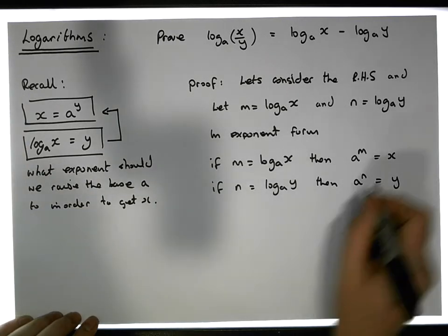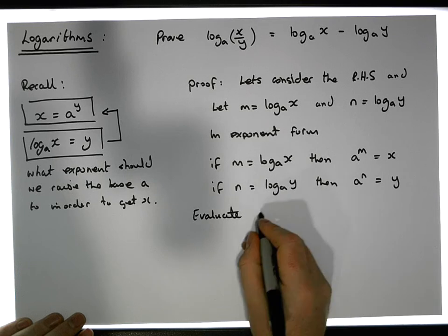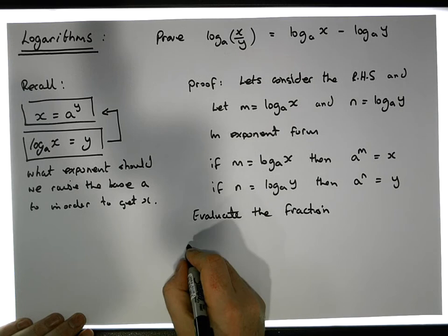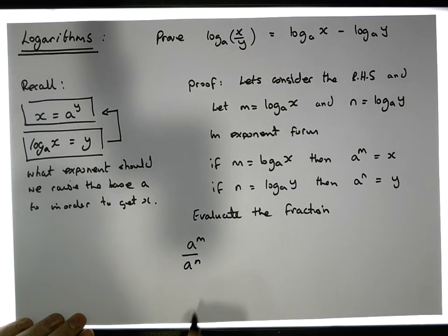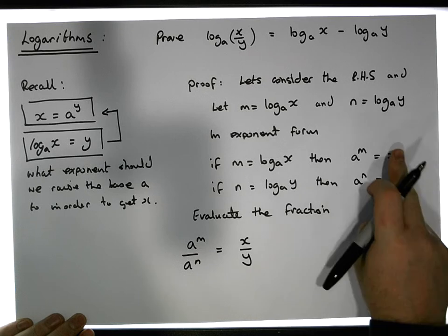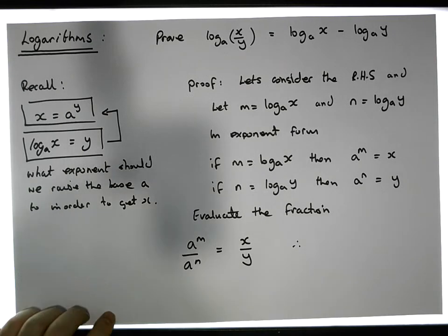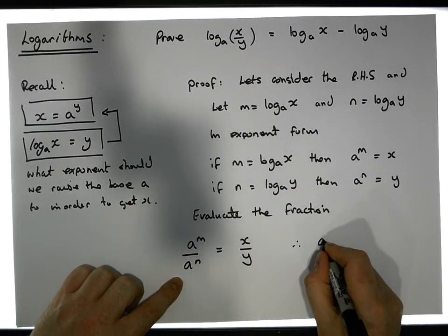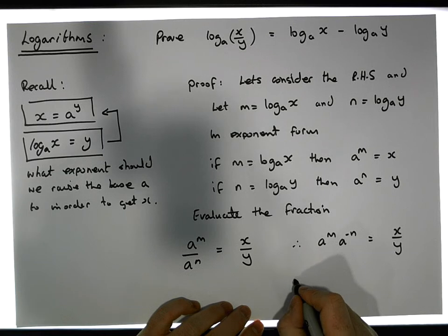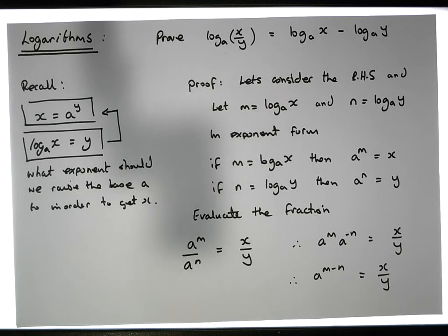Now let's evaluate the quotient. Let's evaluate a to the m over a to the n. Well, a to the m over a to the n is equal to x over y, because a to the m is x and a to the n is y. In exponent form, this implies that a to the m times a to the minus n equals x over y, which tells us that a to the m minus n must be equal to x over y.